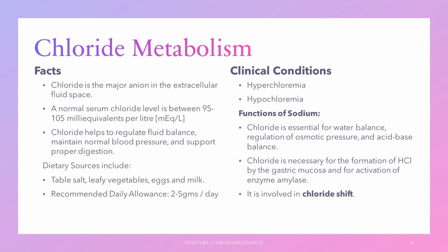The metabolism of chloride is closely related to the metabolism of sodium and potassium. When the body is low on chloride, it retains sodium to maintain normal electrolyte balance; when high on chloride, it excretes excess sodium. Functions include maintaining water balance, regulation of osmotic pressure, and acid-base balance. Chloride is necessary for the formation of HCl by gastric mucosa and for the activation of certain enzymes, which is why it aids digestion. It is also involved in the chloride shift. Clinical conditions due to changes in chloride levels are hyperchloremia and hypochloremia — hyperchloremia is an increase in serum chloride above the normal range, and hypochloremia is a significant fall below the normal range.